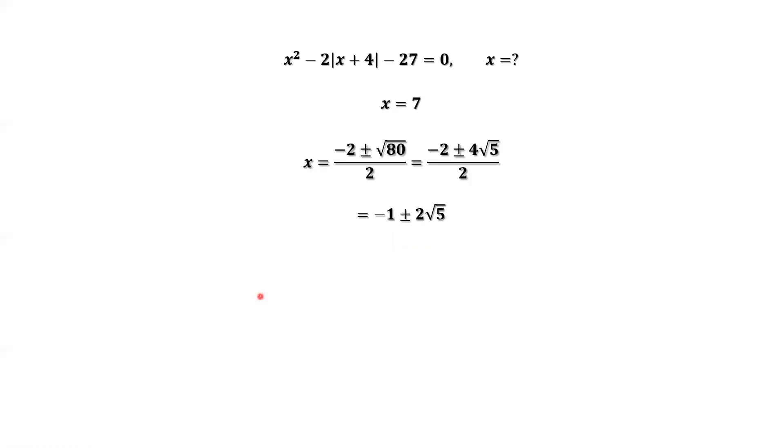We have two answers for x. Because x is less than negative 4, this number is bigger than negative 4. We have to drop this answer. Keep one answer plus this answer. We have two answers for this question: x equals 7 or x equals negative 1 minus 2 times square root of 5.